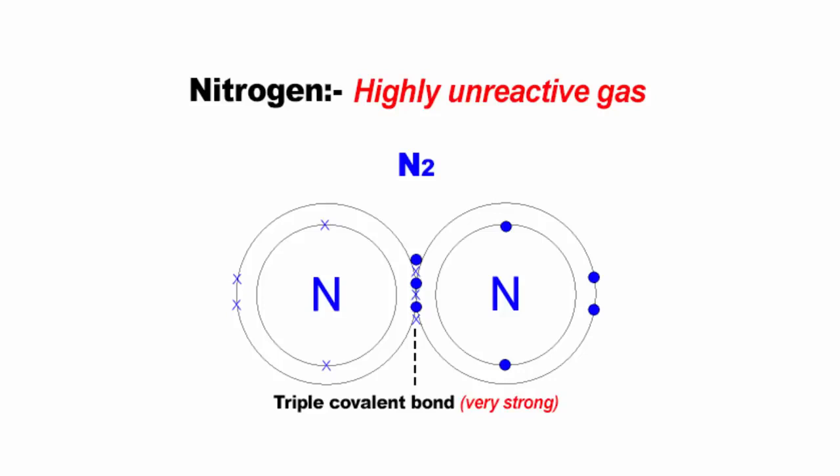The more energy required, the stronger the bond is said to be. In a nutshell, triple bonds are difficult to break because they require a lot of energy to break. Now nitrogen molecules have a triple bond and that makes it very unreactive because it requires a huge amount of energy to break the bonds.